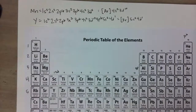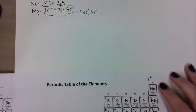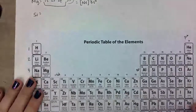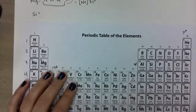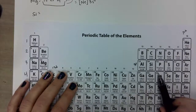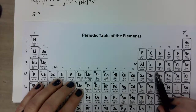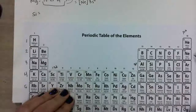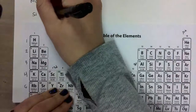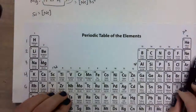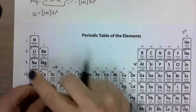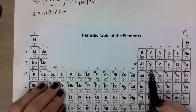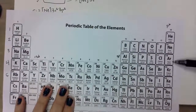One more example: let's do silicon. It's not a very big one, but that doesn't mean we can't write it in noble gas notation. Pause your video and give it a try. Find silicon on the periodic table, then back up in atomic number to your nearest noble gas — that's neon. Put [Ne] in brackets, then to get to silicon go through the 3s shell: 3s2, and then 3p2 because I'm two boxes into the 3p shell.